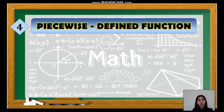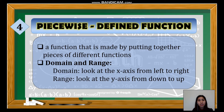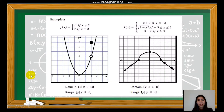The next type of function is the piecewise defined function. It is a function made by putting together pieces of different functions, meaning it is a combination of any type of function — for example, quadratic and constant, or radical and absolute value. To find the domain and range, look at the x-axis from left to right for the domain, and the y-axis from down to up for the range. In a piecewise function, always note that every sub-function has its corresponding condition for its domain.